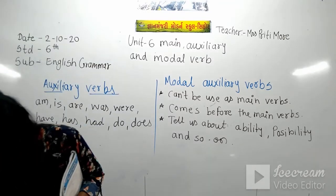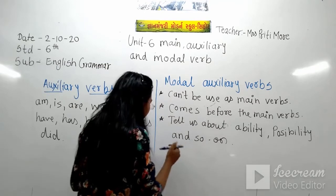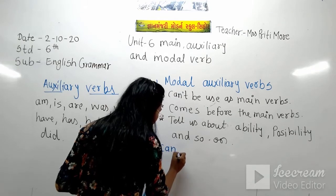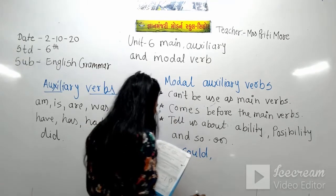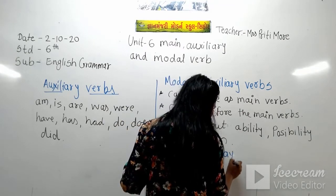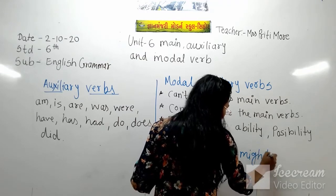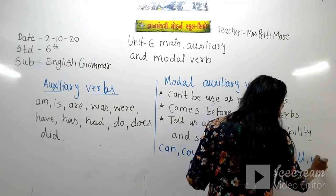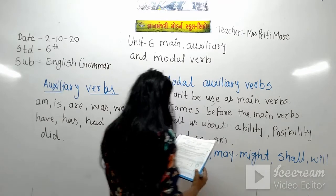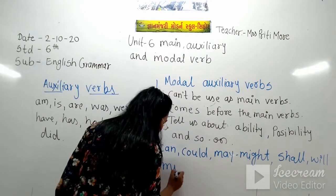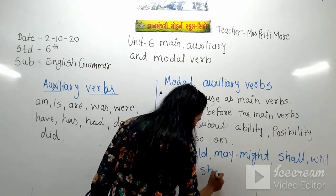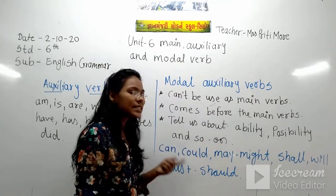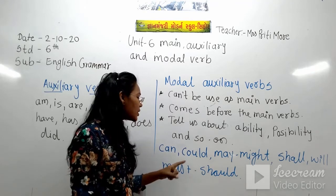Let's write on the board. The modal auxiliaries are: can, could, may, might, shall, will, must, should. There are many modal auxiliaries, but in standard 6, you just have to learn these ones.